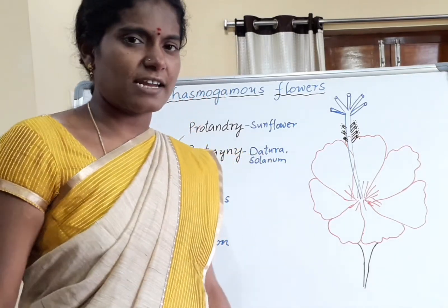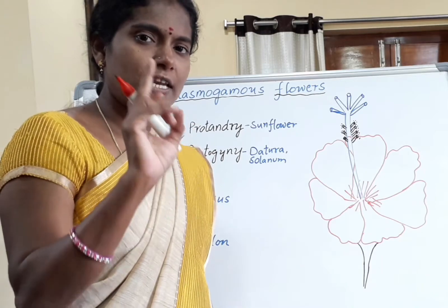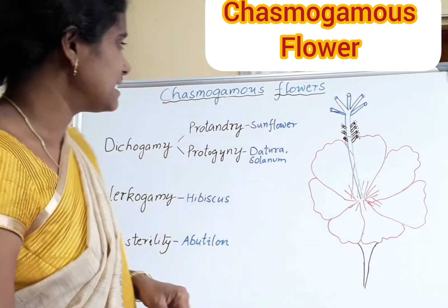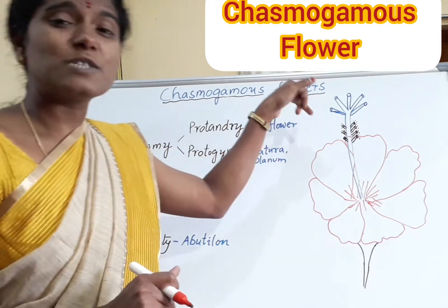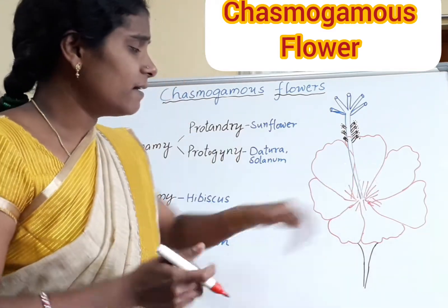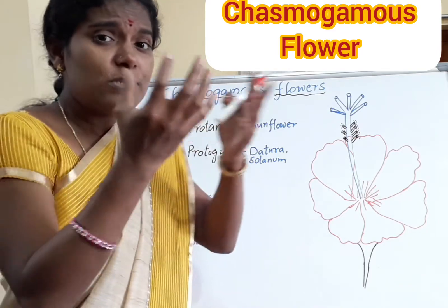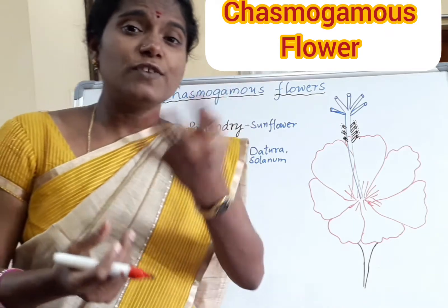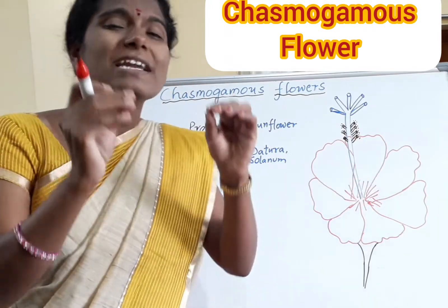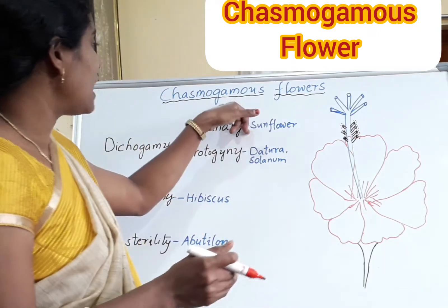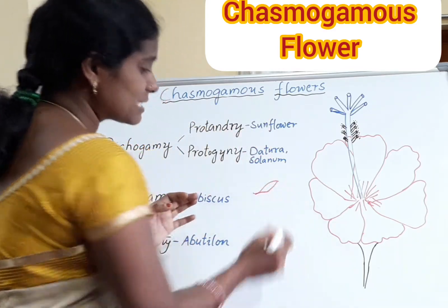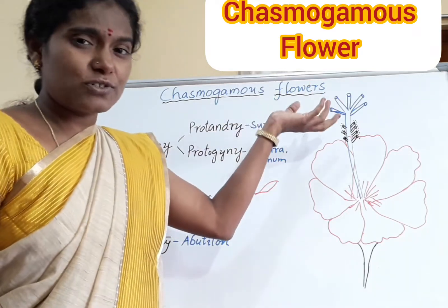Hello students, welcome back to Trendy Achievers channel. Today we cover another important first-year botany concept from the seventh chapter — chasmogamous flowers. This is very important for four marks in the final exam. If a flower is in an open condition — like rose with beautiful colored petals or jasmine with white petals — that type of flower is called a chasmogamous flower. If a flower is in a closed condition, it is called a cleistogamous flower.